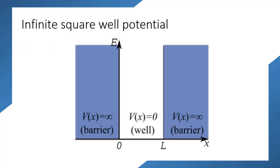What is an infinite square well potential? An infinite square well potential is a well which is surrounded by potentials which are infinite in value. We have a well which is between zero and L, and it is surrounded by potentials of infinite values. Any particle trapped inside has zero possibility to cross to either region, as these two regions have infinite potentials and the potential inside the well is zero. This well is called an infinite square well potential.